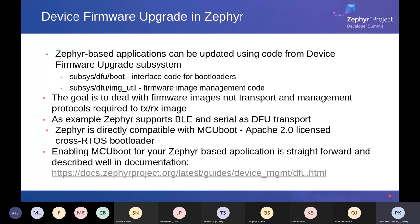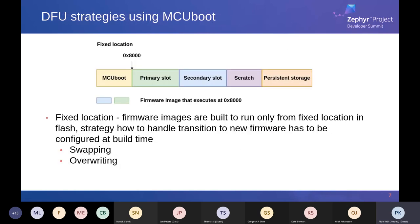You can enable MCU boot quite easily — there is good documentation available via the link on the bottom of the slide. What kind of strategies can you use for updating your Zephyr-based application? The first strategy relates to fixed-location firmware. We have two main possibilities: either fixed location where we start from a given address, or execute-in-place where we can start from any address in SPI Flash. In the fixed location case, there are two main ways: a swapping way and an overwriting way.